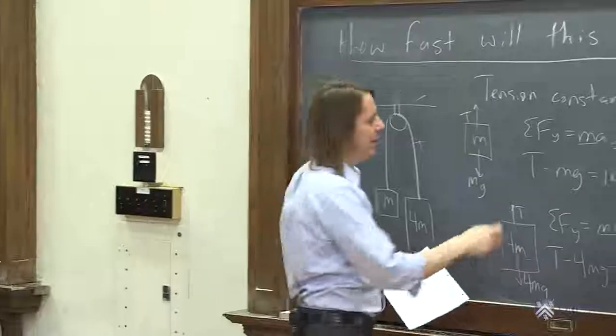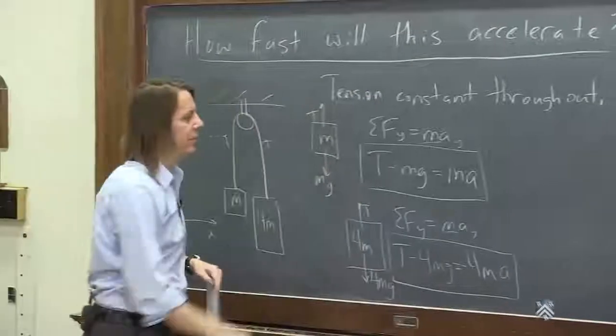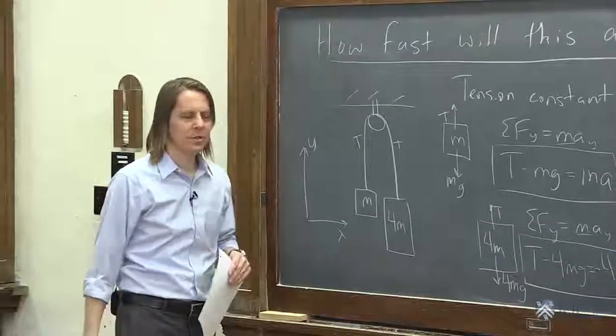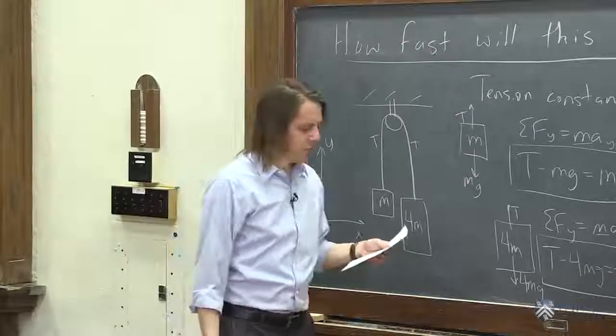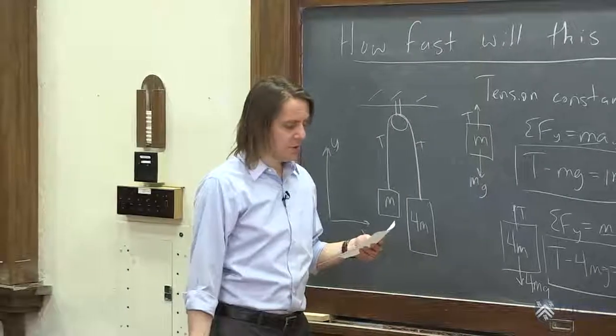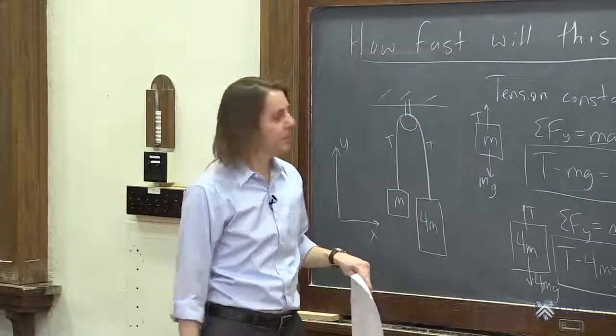So what do we have? We have two equations and two unknowns. The unknowns are the tension and the acceleration. The equations are right there, one for each mass. So the quickest way to solve this one, it looks like I just equated the tensions, because we were asked for the acceleration.